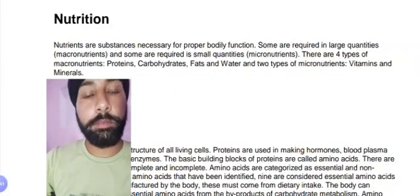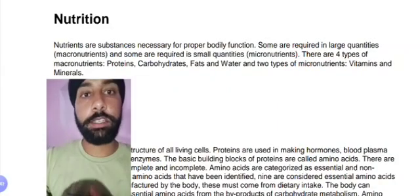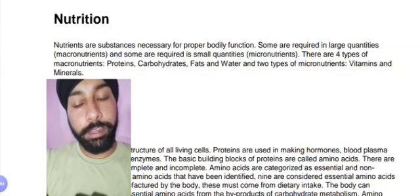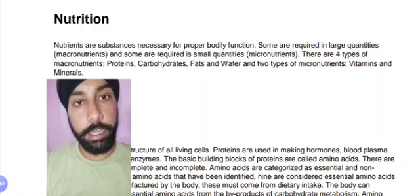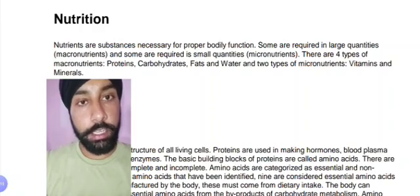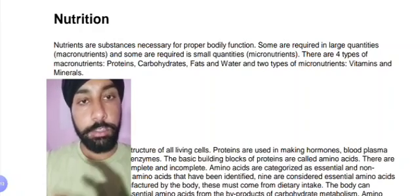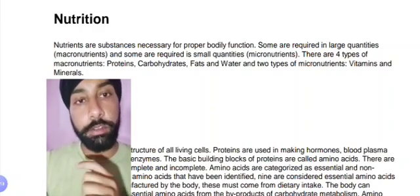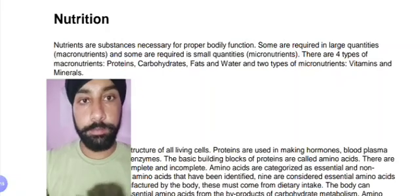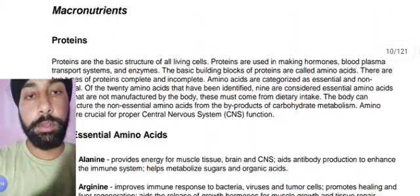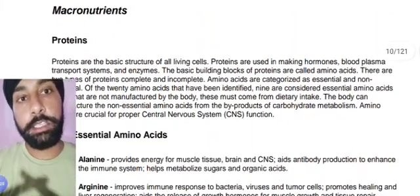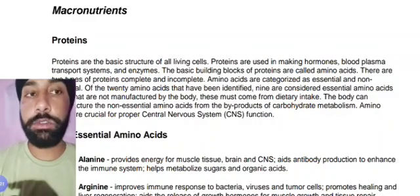In the previous video we studied about two types of nutrients. In this video we'd like to discuss further categories and explain each and every category. The first macronutrient we are going to discuss is protein. Proteins are the basic structure of all living cells.